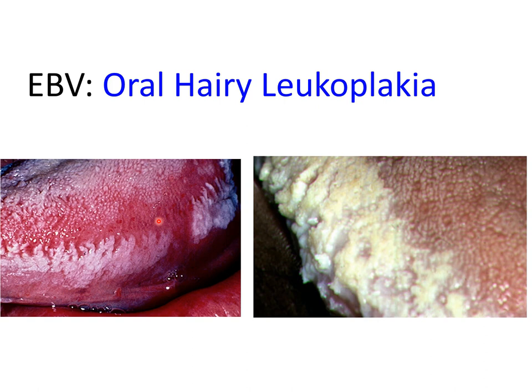Oral hairy leukoplakia due to Epstein-Barr virus infection is one of the most common oral manifestations of HIV infection, but it can also be seen in immunocompromised patients such as organ transplant recipients. Generally no treatment is required, but some resolution can be obtained with antiviral drugs like acyclovir or retinoids; however, the lesions tend to recur following discontinuation of therapy. Importantly, oral hairy leukoplakia in HIV is not caused by HIV itself — it is the immunosuppression in HIV which leads to increased risk of EBV infection, and it is EBV which causes oral hairy leukoplakia.